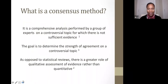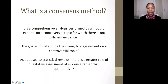So first, what is a consensus method? It is a comprehensive analysis performed by a group of experts on a controversial topic for which there is insufficient evidence. This has been a really important tool in the areas of health and medicine, and the goal is to determine the strength of agreement on specific controversial topics. For example, in 1977, the NIH developed about 40 consensus development conferences to help with the treatment of isoniazid-resistant tuberculosis.